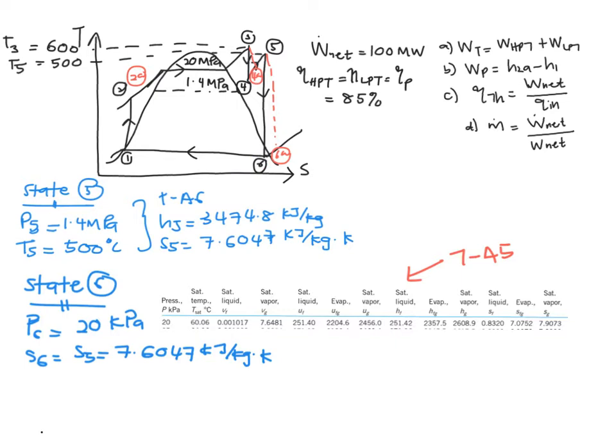You will need to find your quality X. The general form is Y equals YF plus X times YFG. You are going to make use of this general equation and substitute with your S in order to find X.